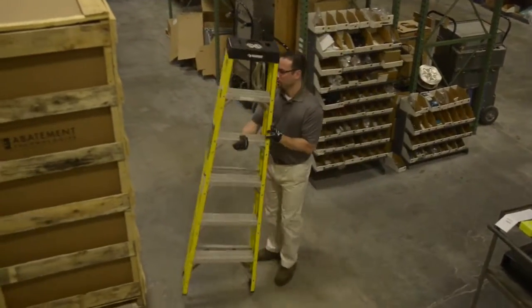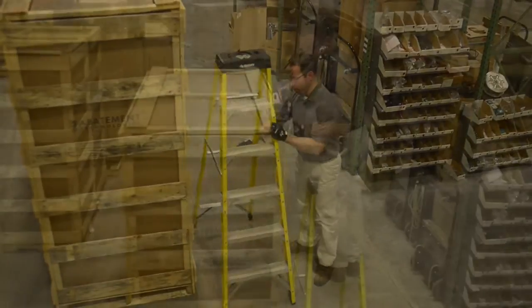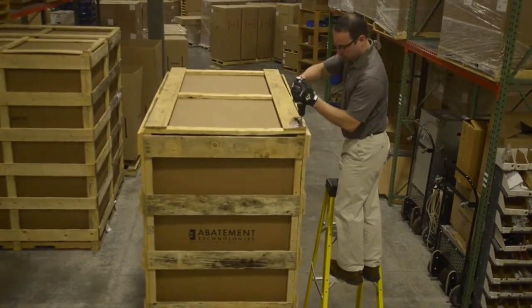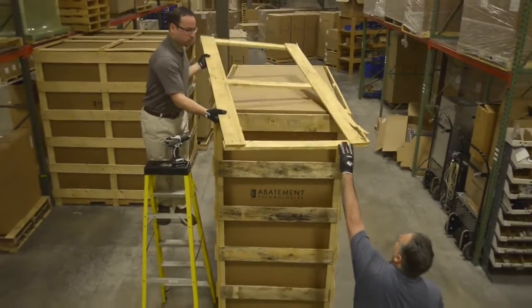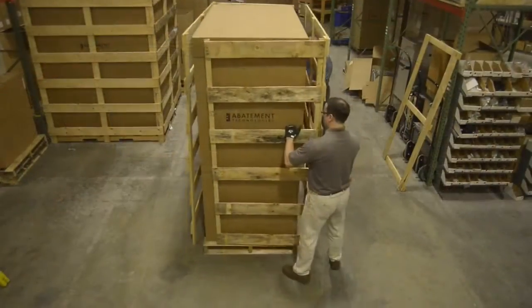The crate can come apart in panels instead of pulling off the individual slats. Begin by removing the top panel of the unit by removing the screws, then remove the screws at the corners to separate the side panels.